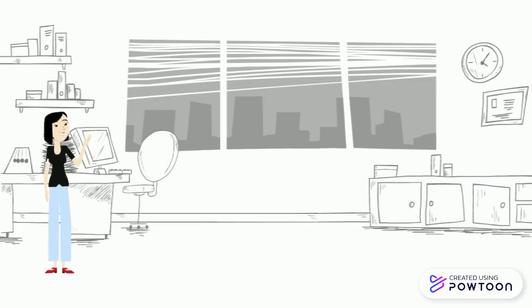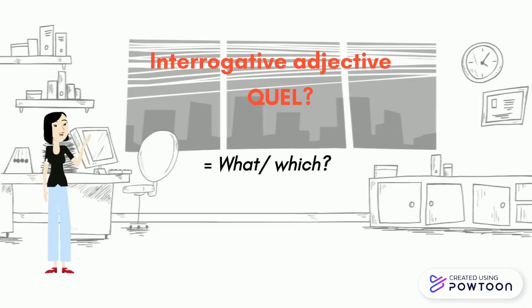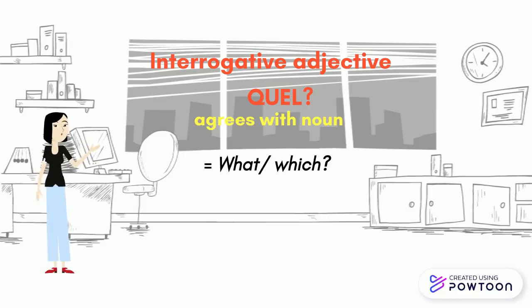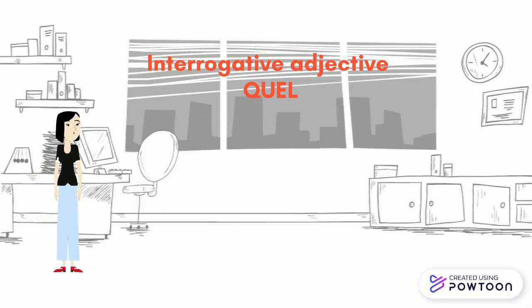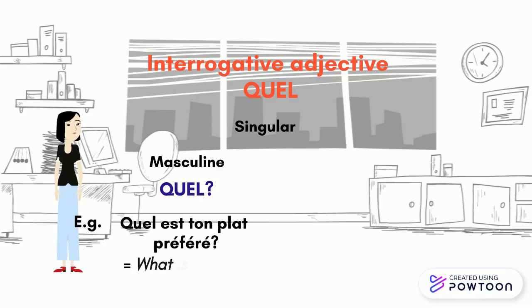Finally, we have the interrogative adjective QUEL. It can be translated as « what » or « which » and it agrees with the noun to which it relates. The masculine singular form is QUEL. For instance, Quel est ton plat préféré? — What is your favourite dish?